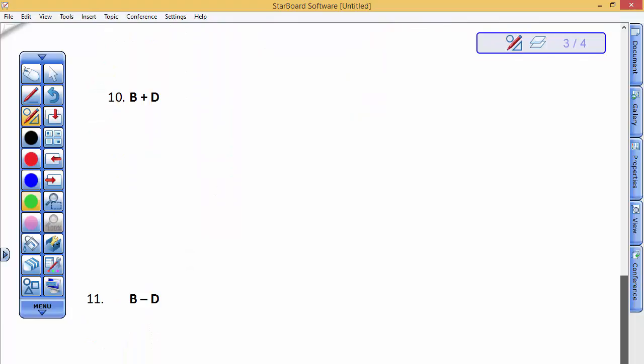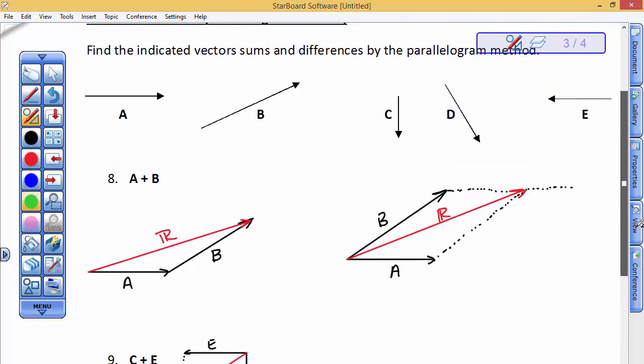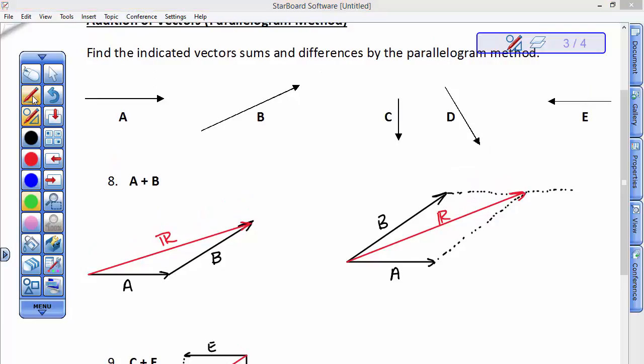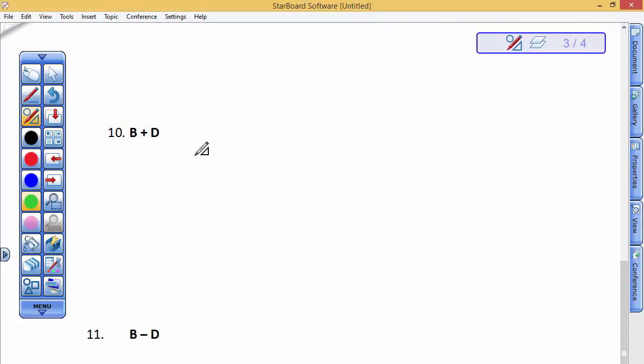B plus D, again, put their tails together. So B goes like this. D goes like this. So tails together. B was like this. I believe D was about like this. And then the parallelogram that I'm going to draw. This side's parallel to the side opposite. This side's parallel to its side opposite. And my answer is going to be right here, where the opposite side of the parallelogram is. And this is the resultant of B plus D.